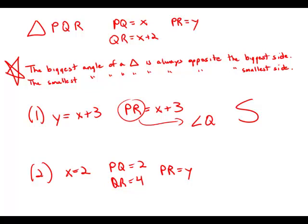Y could be 5. So we have no idea which side is the largest side. And because we don't know which side is the largest side, we don't know which angle is the largest angle. So this statement taken by itself is insufficient. One is sufficient. Two is insufficient. Answer choice A.